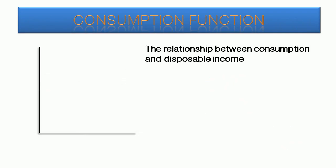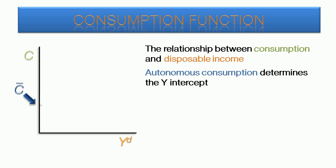Graphically, the consumption function displays the relationship between consumption and disposable income. Consumption, the dependent variable, is on the y-axis. Disposable income, the independent variable, is on the x-axis. The level of autonomous consumption determines the y-intercept.